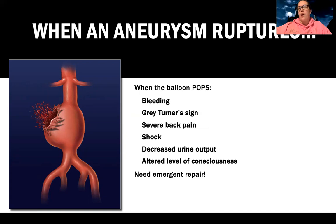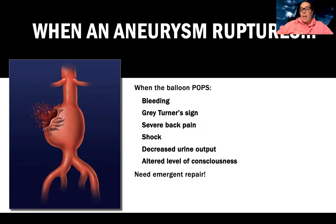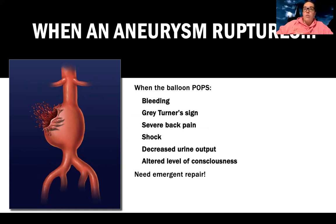There's also the Cullen sign — bruising around the umbilical area — and the Grey Turner sign is bruising in the flank area. Both are signs of internal bleeding. They'll usually complain of severe back pain and show signs of shock: low blood pressure, high heart rate, decreased urine output because the aorta supplies the kidneys, and altered level of consciousness because the brain isn't getting adequate oxygen.